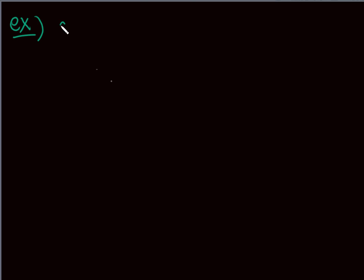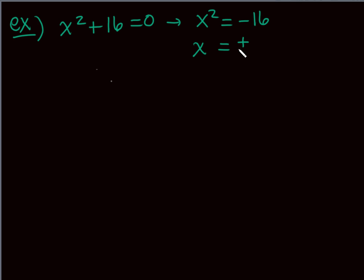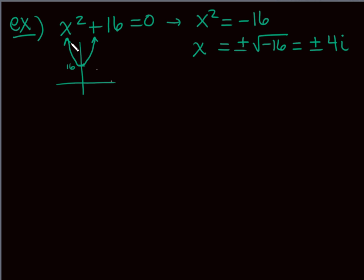Sometimes we don't stay in the real numbers — we get imaginary solutions. For example, x² + 16 = 0 gives x² = -16, and taking the square root gives ±√(-16) = ±4i. Graphically, this parabola is shifted up 16 and never crosses the x-axis, so there are two complex solutions but no real zeros.